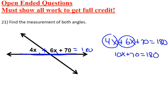What you have right now is a two-step equation. So you subtract 70 from both sides, 10x comes down, equals 110.